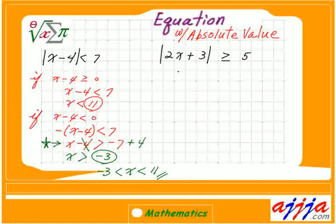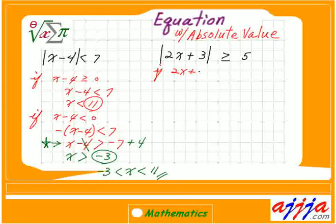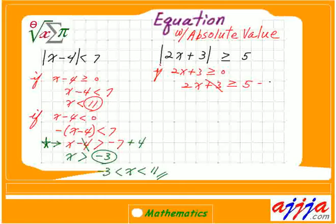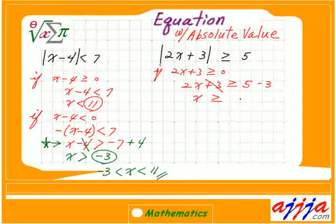Absolute value sign again. If 2x plus 3 is greater or equal to 0, then just open it, so 2x plus 3 is greater than 5. Now subtract 3, which gives 2, then divide both sides by 2, so x is greater or equal to 1.